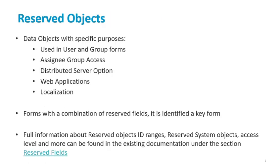Reserved Objects: BMC Remedy AR System reserved objects are special purpose data fields. Some of these fields are used in the user or group forms; others are used for assigning group access, the distributed server options or DSO, web applications, or localization. When a form contains a combination of reserved fields, the BMC Remedy AR System Server identifies this form as a key form. For example, a form that contains fields with IDs 101, 102 and 104 is identified as the user form, because field ID 101 belongs to login name, field ID 102 belongs to password, and field ID 104 belongs to group list. All three fields are by default reserved field objects.